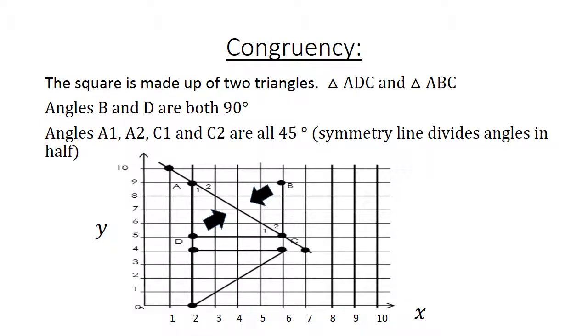Angles A1, A2, C1, and C2 are all 45 degrees, because the symmetry line divides angles in half.